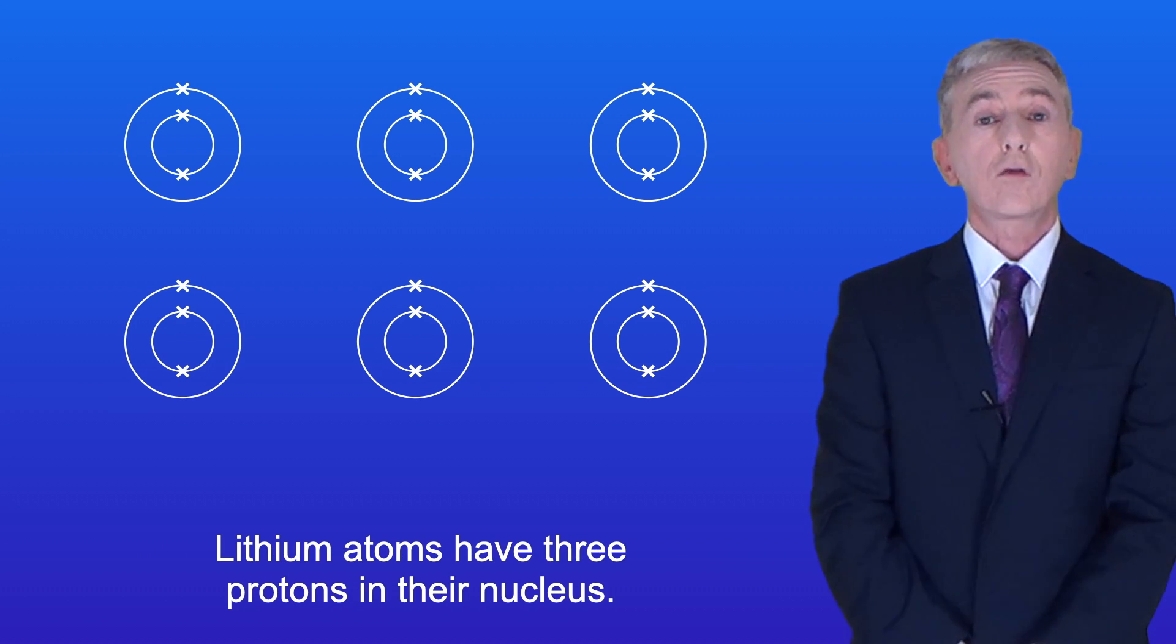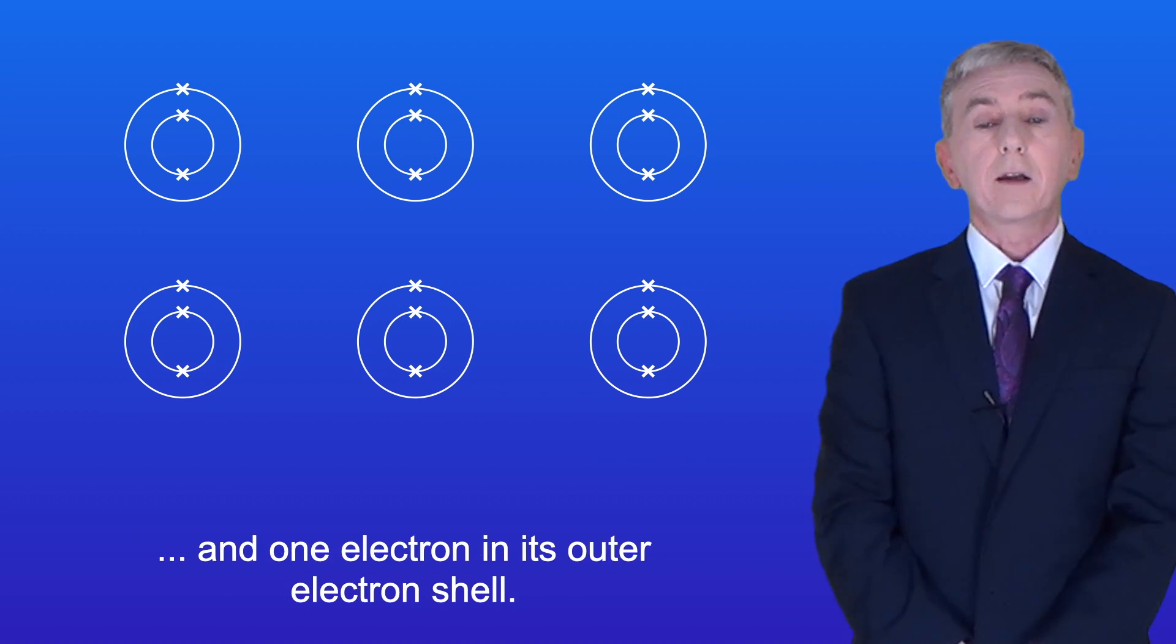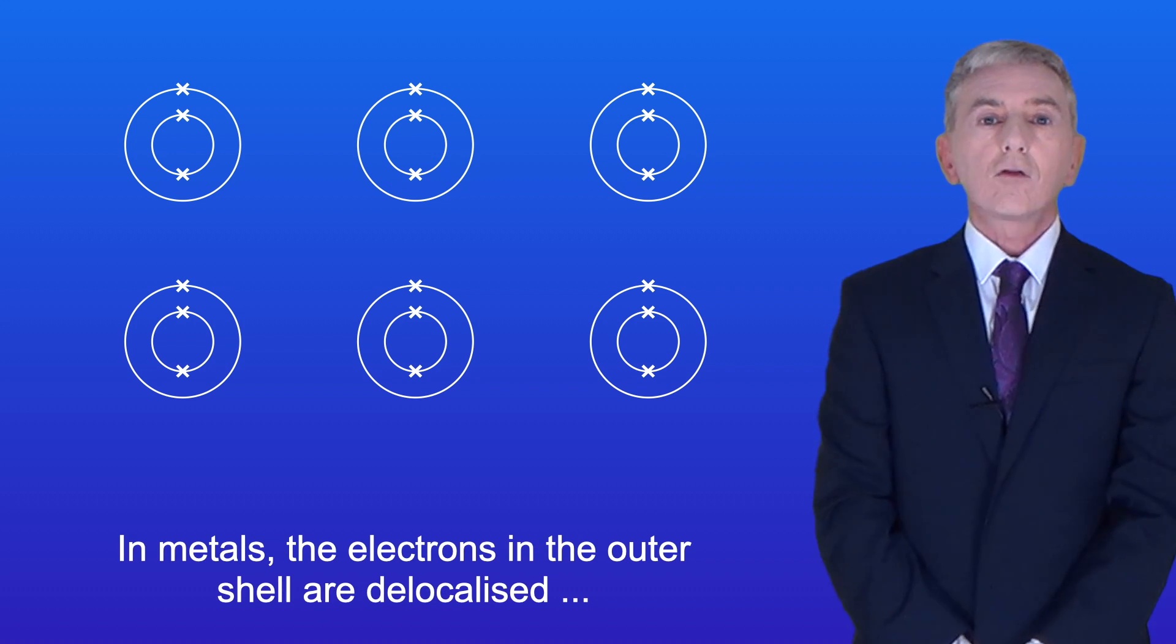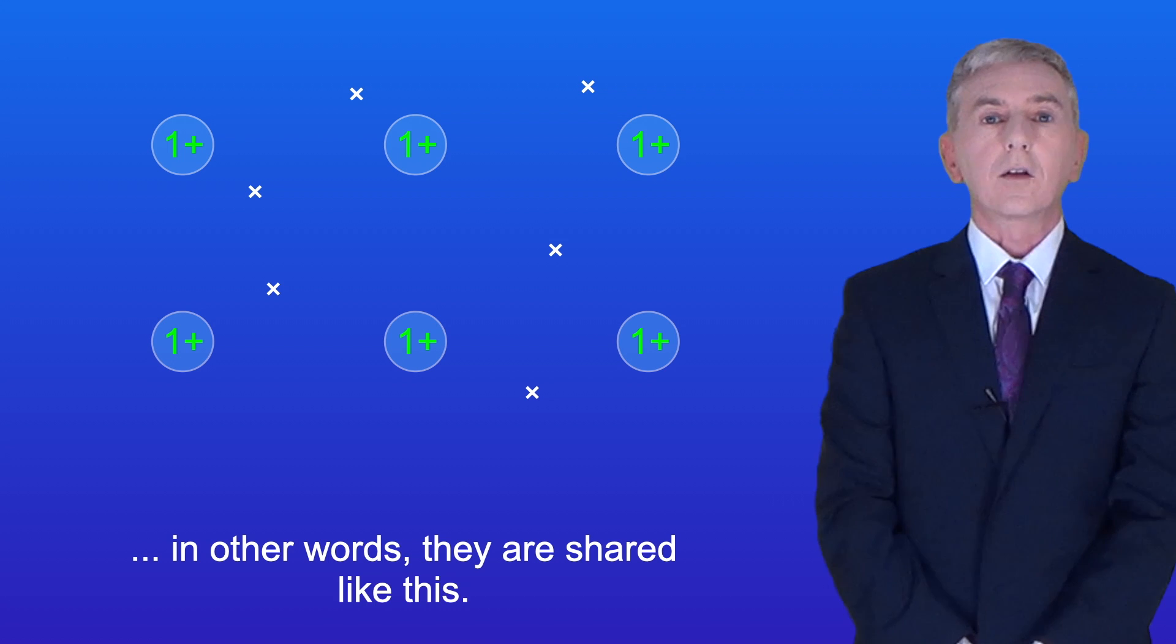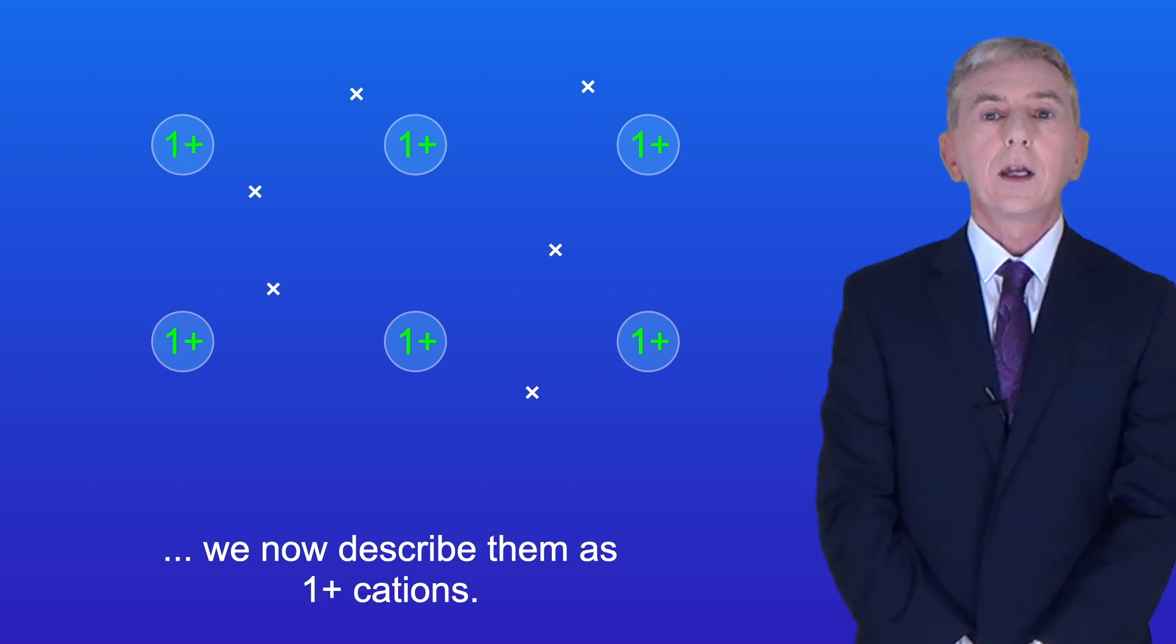Lithium atoms have three protons in their nucleus. Lithium also has two electrons in its first electron shell and one electron in its outer electron shell. Now in metals the electrons in the outer shell are delocalized. In other words they're shared like this. Because the lithium atoms have donated their outer electron we now describe them as one positive cations.